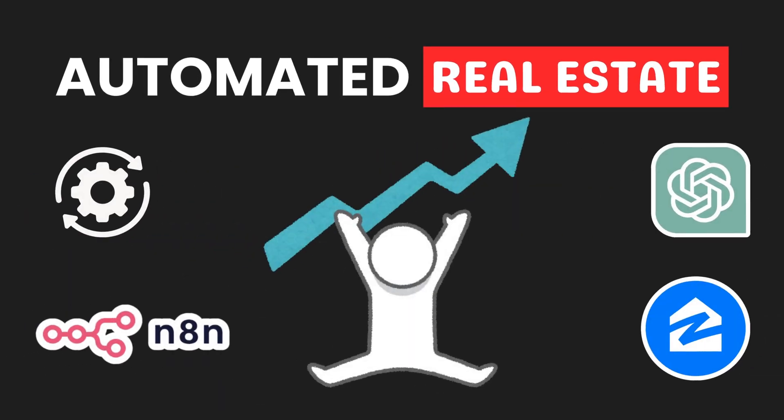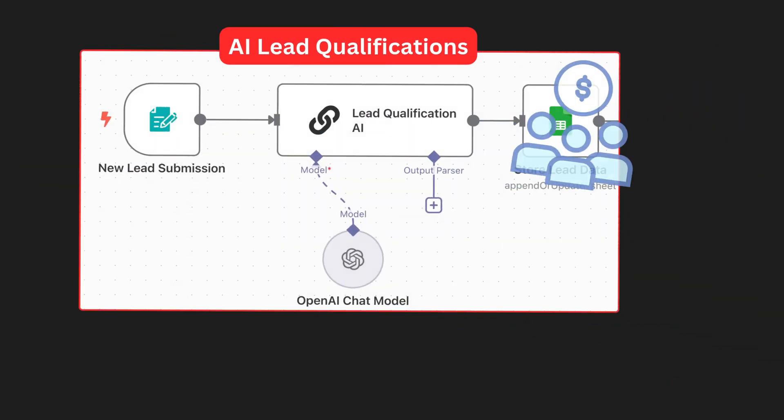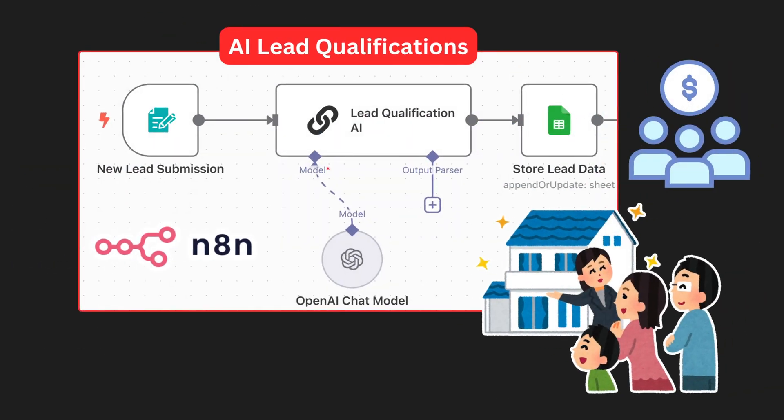This video is all about workflow automations for real estate agents. These automations are going to help real estate agents save time, nurture clients, and close more deals. I'm going to show you exactly how real estate agents can automate lead qualifications by using AI automations, categorizing prospects based on their intent and budget so that real estate agents can focus on the most serious buyers.